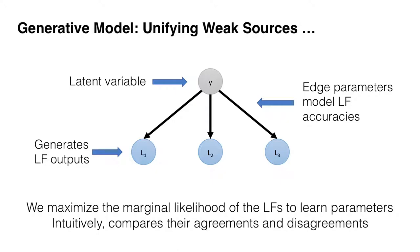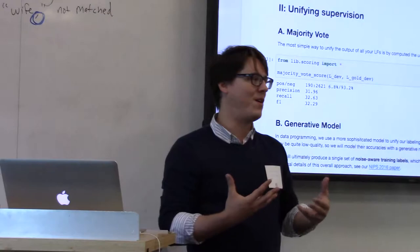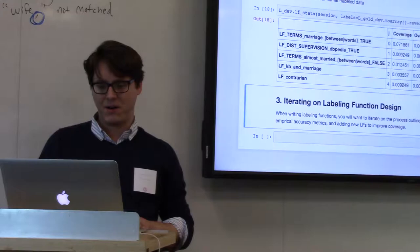The flux capacitor here that makes this possible is our generative model. There is a latent true class variable for every candidate we're attempting to make a prediction for. We can associate parameters on the edge—this is a graphical model factor graph representation. We want to maximize the marginal likelihood of these LFs to learn the parameters of those edges, which we can do intuitively by looking at the way they overlap and conflict with each other.